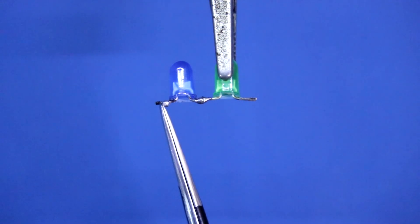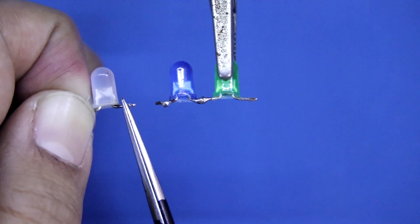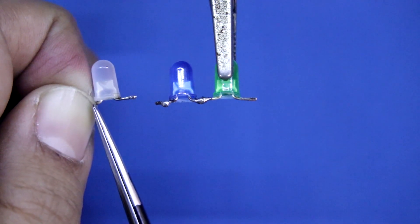This is positive pin of the blue LED. And this is negative pin of white LED. And this is positive side of white LED.